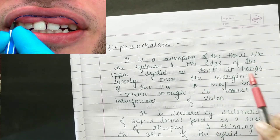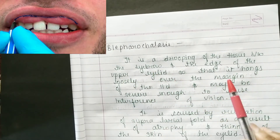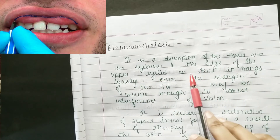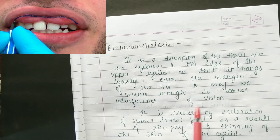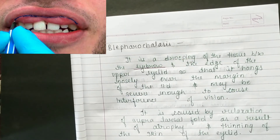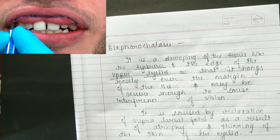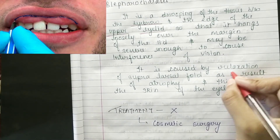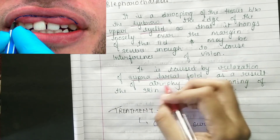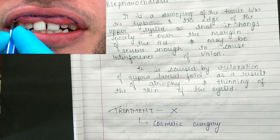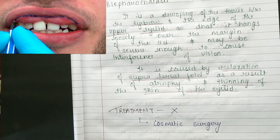Blepharochalasis is a drooping of the tissue between the eyebrows and the edge of the upper eyelid, so that it hangs loosely over the margins of the lid and may be severe enough to cause interference with vision. It is caused by relaxation of the supratarsal fold as a result of atrophy and thinning of the skin of the eyelid.